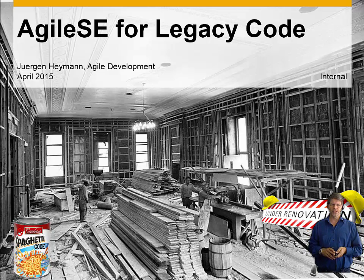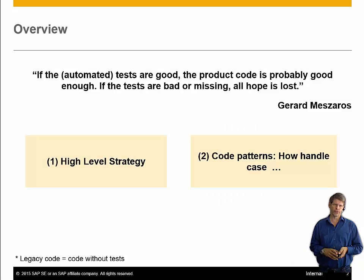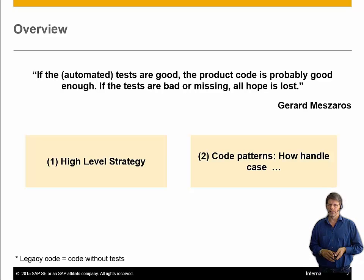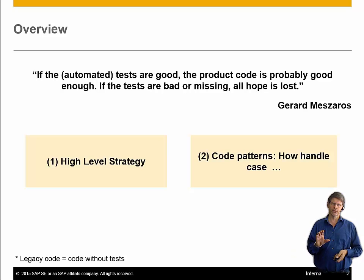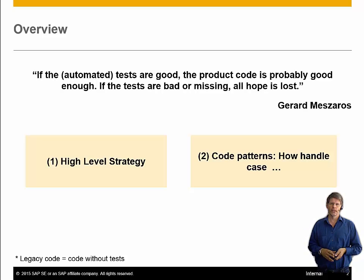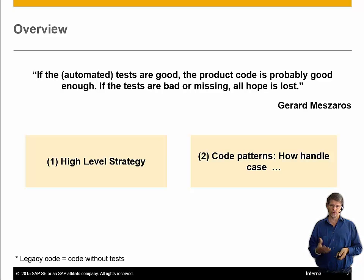This topic has two main parts, and I want to start with a quote from Gerard Messaros, who wrote the famous book about xUnit test patterns — one of the gurus in the field. His quote: 'If the automated tests are good, the product code is probably good enough. If the tests are bad or missing, then all hope is lost.' So if you have no automation coverage in legacy code — an old, big system — the question is how do you get it, and what is the right way to do it?